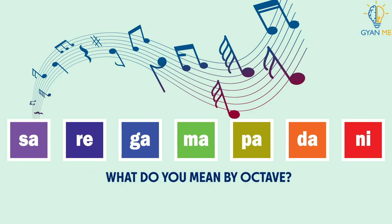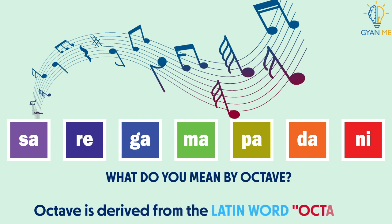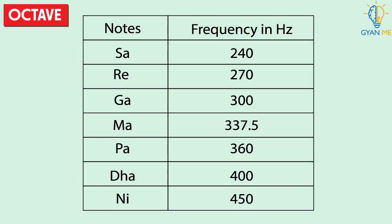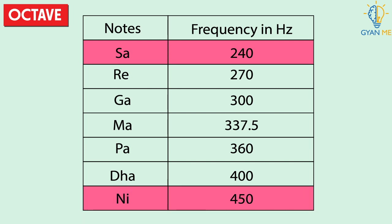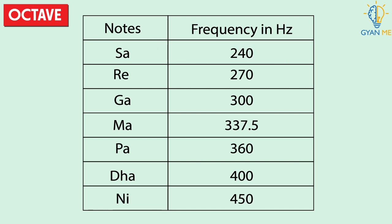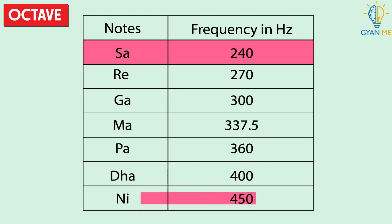What do you mean by octave? Octave is derived from the Latin word 'Octavis' which means eighth. In music, an octave means an interval between one musical pitch and the other with approximately double its frequency. Look at the first note here — Sa has a frequency of 240 and the last note Ni has approximately double the frequency of 450 hertz.